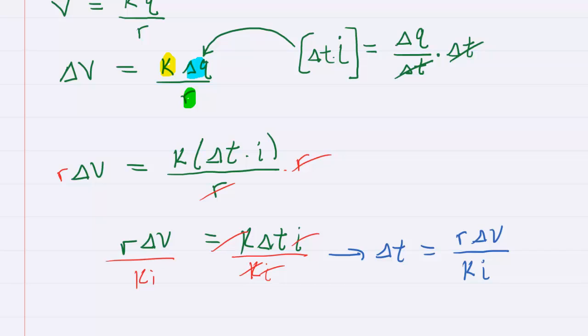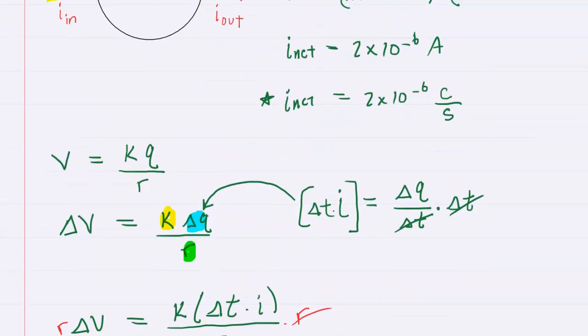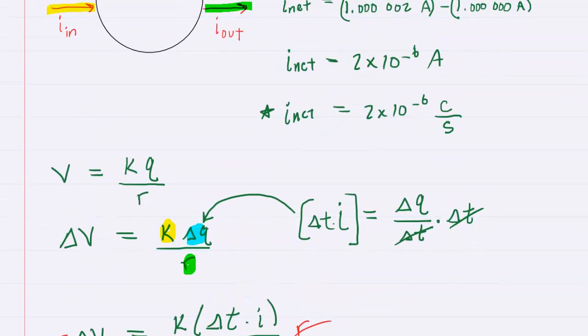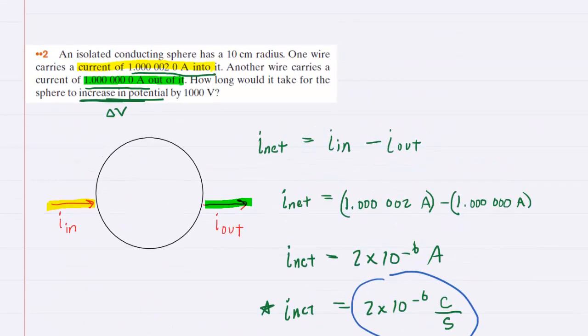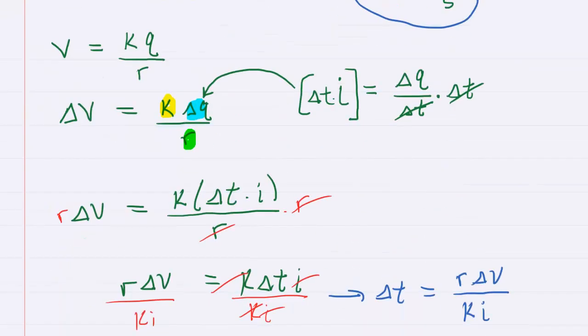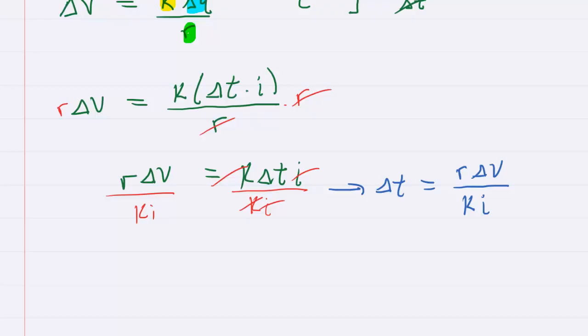Now, remember, previously we determined that the net current that is entering the sphere is this value right here. So that's the value of current that we're actually going to be plugging in because that's the overall current that's traveling onto the sphere. And then the other values we're given in the question, delta V was 1,000 volts and the radius was 10 centimeters. Now, of course, we're going to have to convert that into meters.